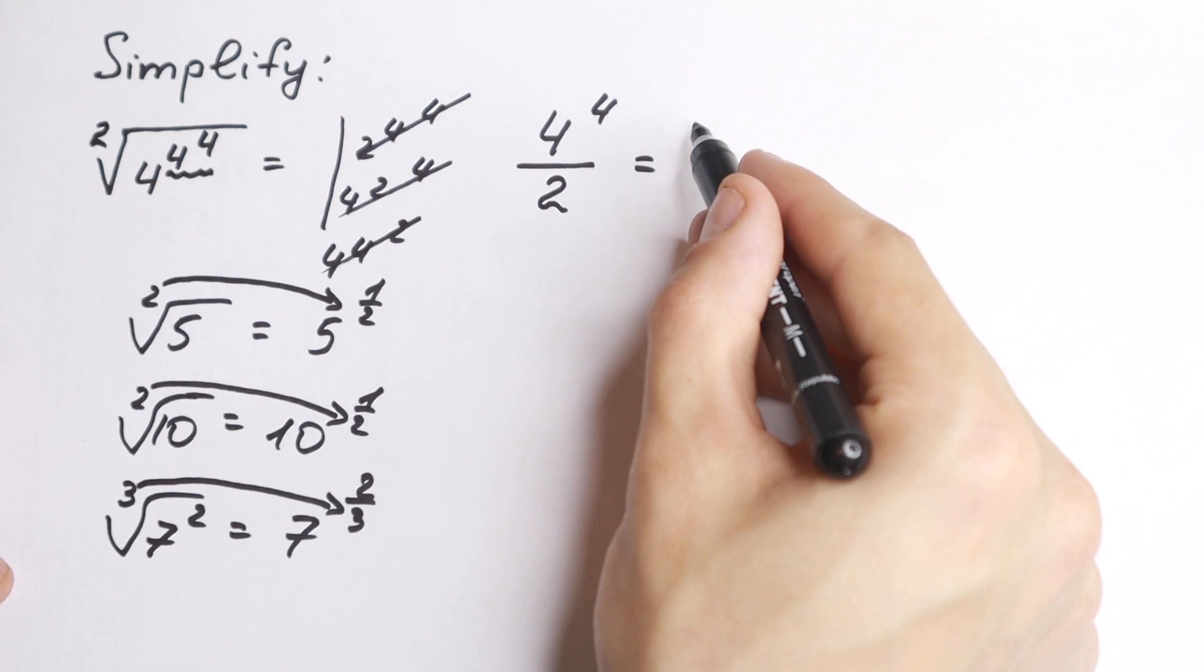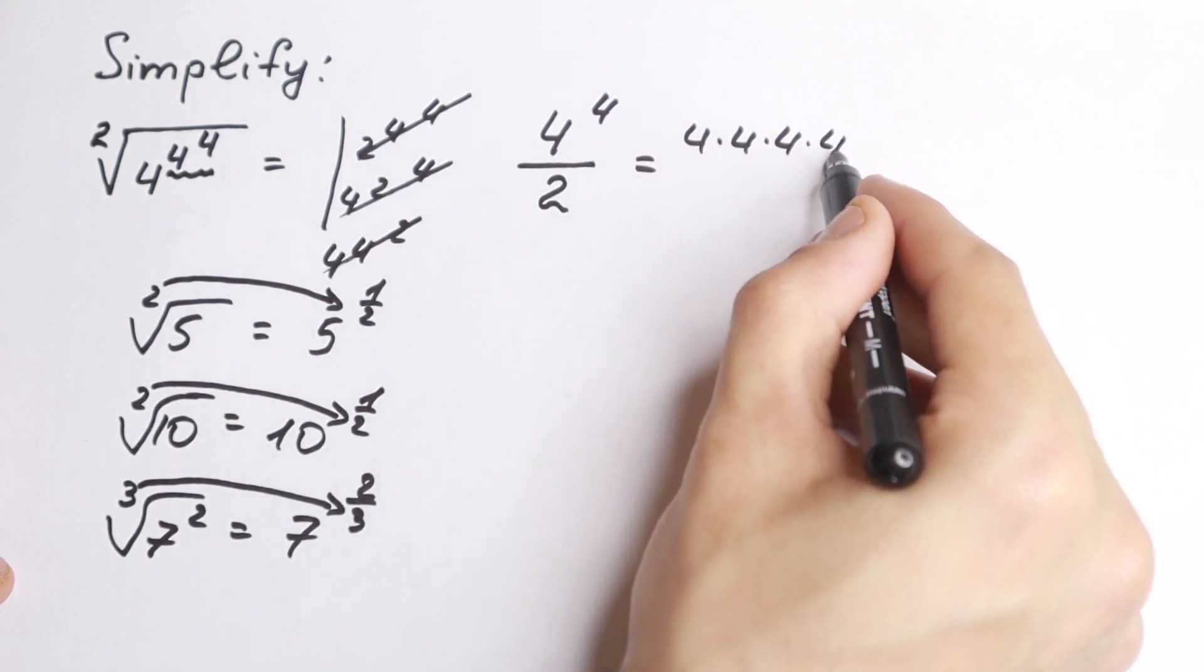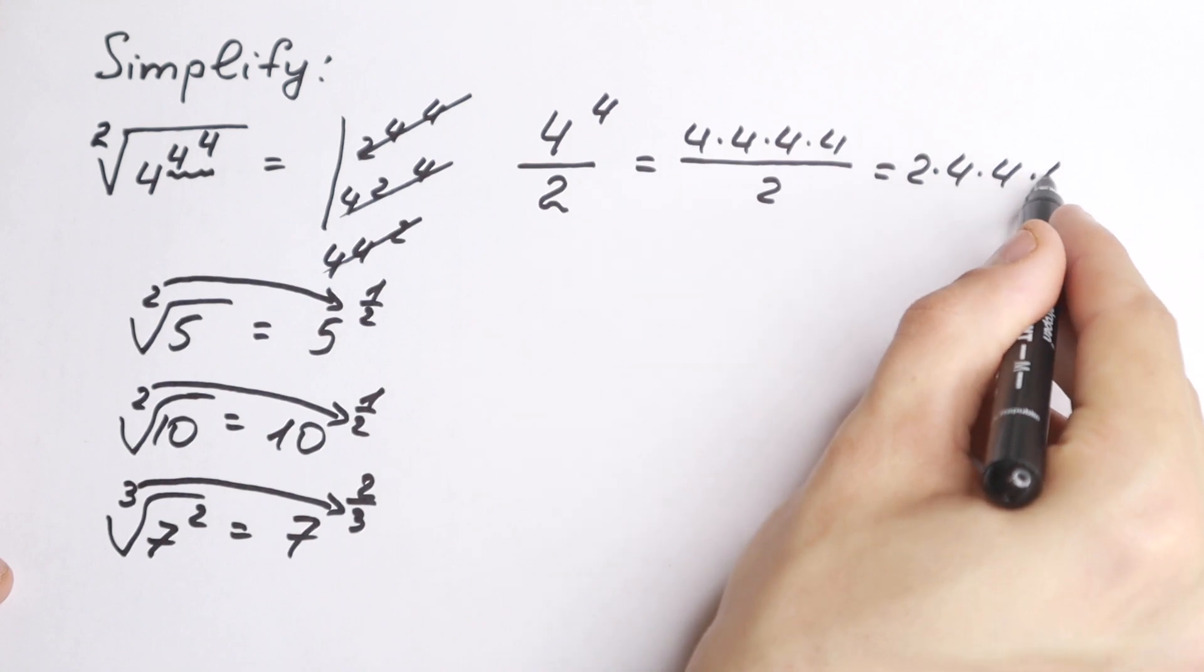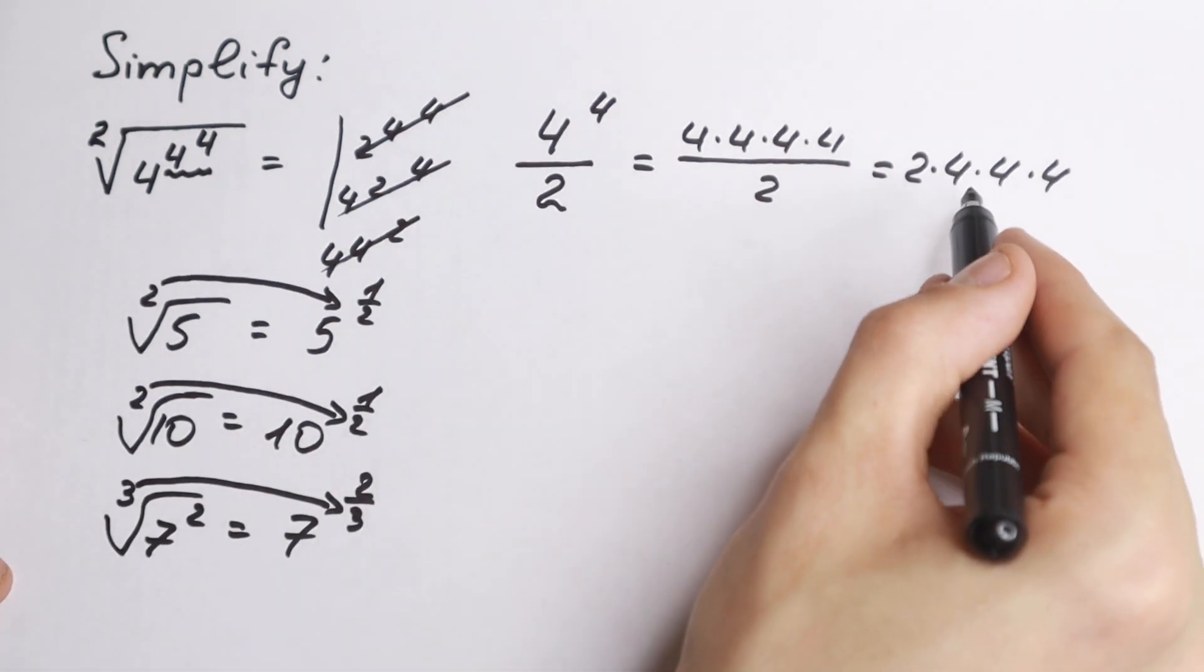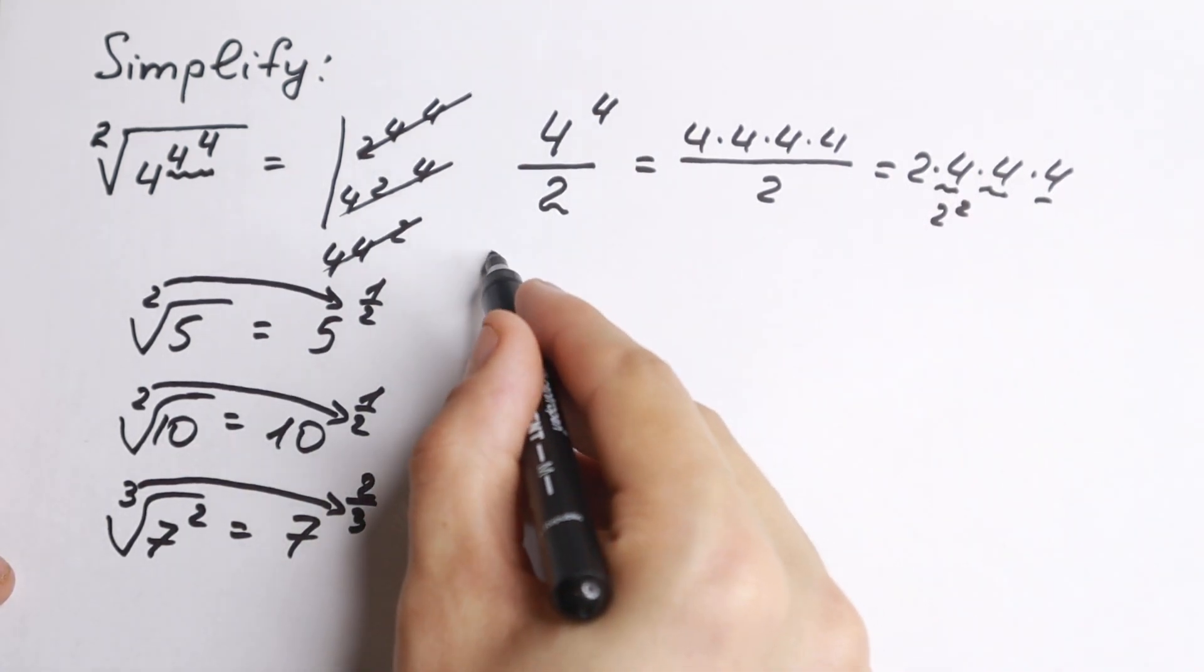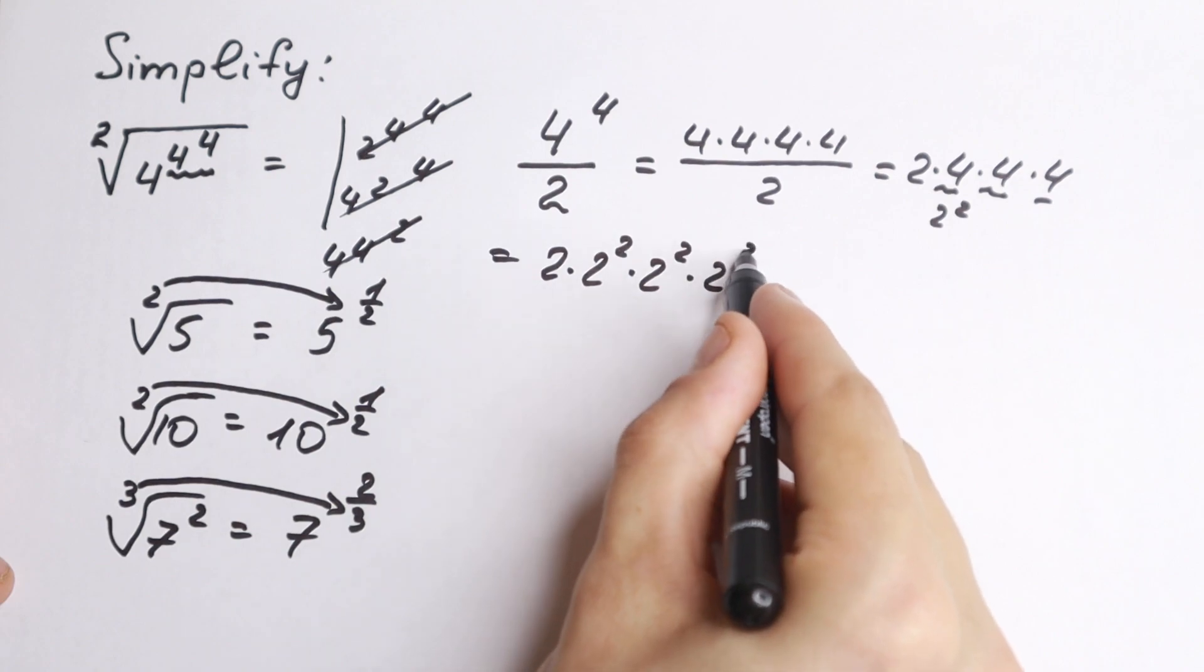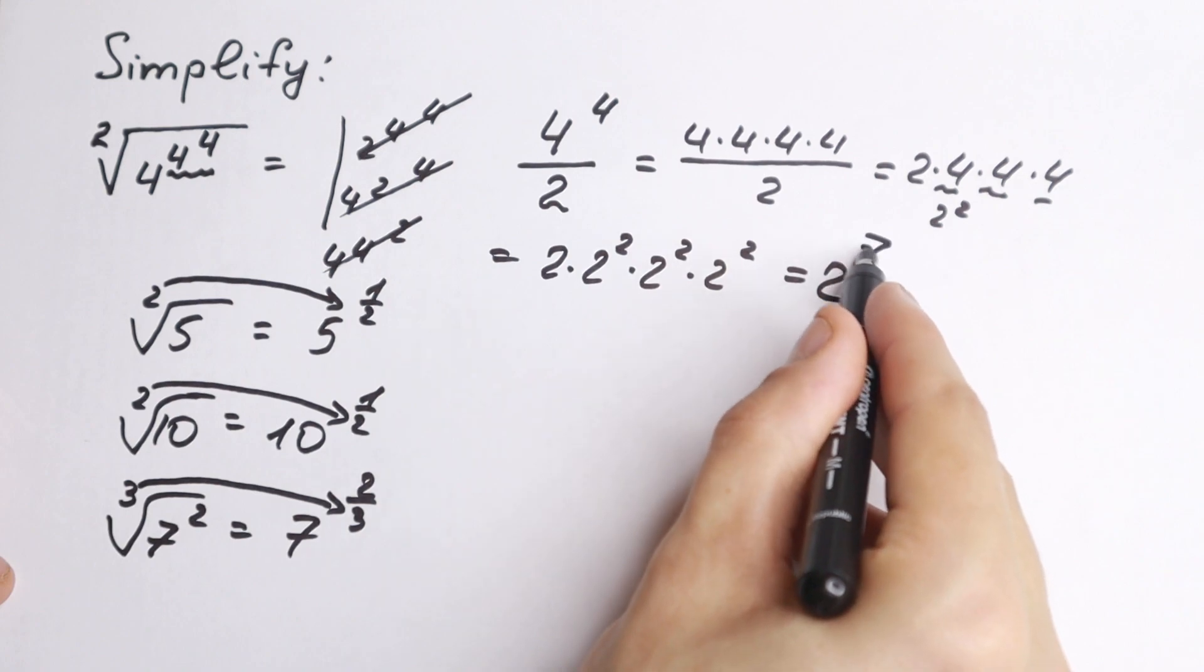As a result, 4^4 equals 4×4×4×4. We divide it by 2, and get 2×4×4×4. But what about the power? This 4 equals 2². So we can change every 4 to 2². These 2 in the beginning, then 2×2², this is the first 4, second 4, and third 4. That's 2, 4, 6, 7. So this equals 2^7.